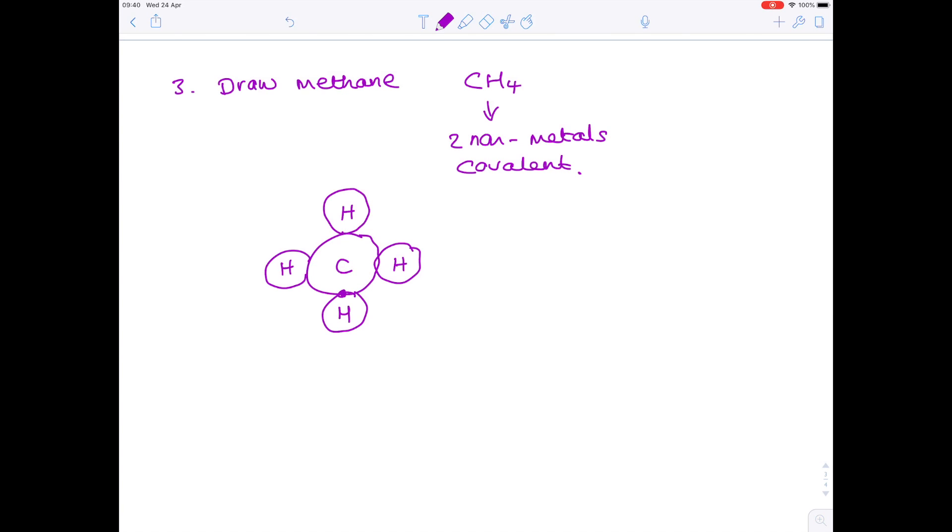Each hydrogen has one electron in its outer shell. Each carbon has four. Double check to see if they're both full. Yes, they are. Each carbon now has eight electrons. Each hydrogen has two electrons. Remember, hydrogen only needs two electrons to have a full outer shell, because it only enters the first shell.